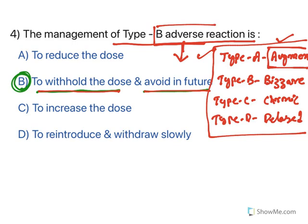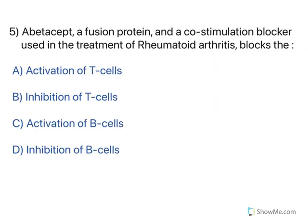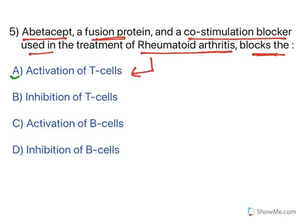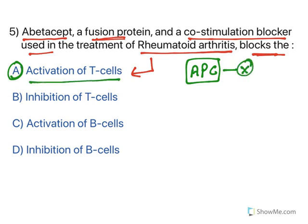Abatacept is a fusion protein and co-stimulation blocker used in the treatment of rheumatoid arthritis. Its mechanism of action is to block activation of T-cells. T-cells are activated by antigen-presenting cells, and abatacept inhibits the attachment of antigen-presenting cells to T-cells, thereby inhibiting T-cell activation.